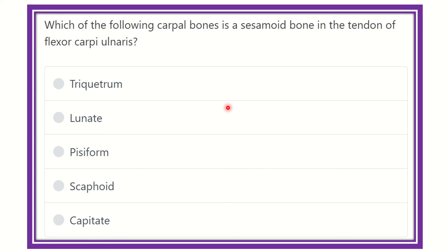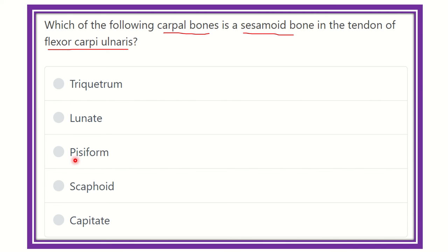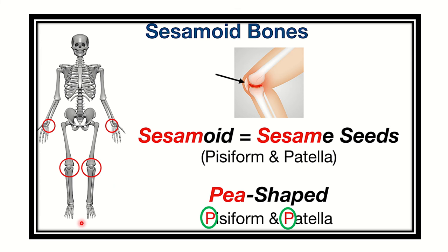Welcome to another question and answer session. Which of the following carpal bones is a sesamoid bone in the tendon of flexor carpi ulnaris? We have to find out the sesamoid bone which is one of the carpal bones, located at the side of the flexor carpi ulnaris tendon. We know there are eight carpal bones. The options are: pisiform, lunate, pisiform, scaphoid, and capitate.